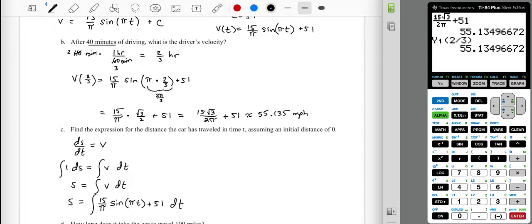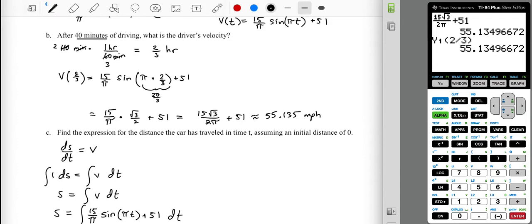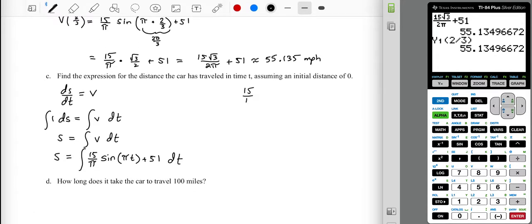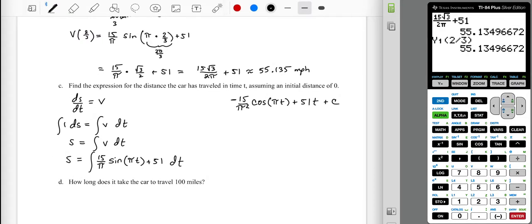We anti-differentiate sine, we're going to get negative cosine. So we're going to hang on to the 15 over pi. We're going to tack on a negative to account for the fact that sine becomes negative cosine through the anti-differentiation process. So we're going to have that pi t. 51 is going to become a 51 t. And then we're going to have a plus c. But when we differentiate a cosine of pi t, cosine pi t becomes negative sine of pi t, but then multiplied by the coefficient of t, which is pi. So to correct for that, we have to divide by another pi. So this should be negative 15 over pi squared. That's to avoid things like u substitution.